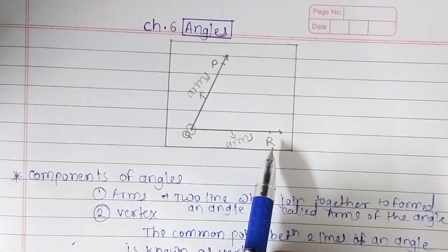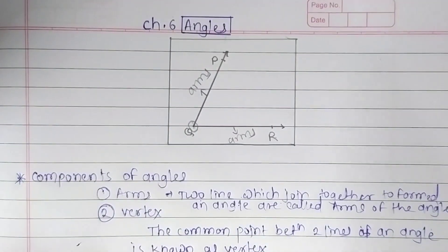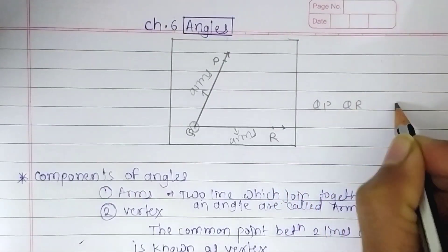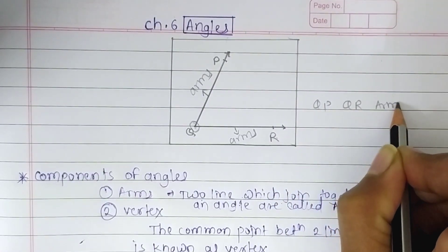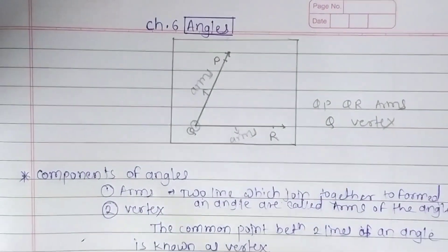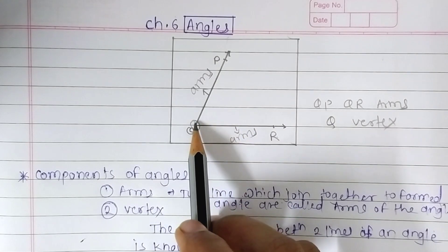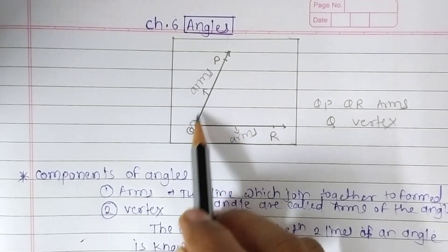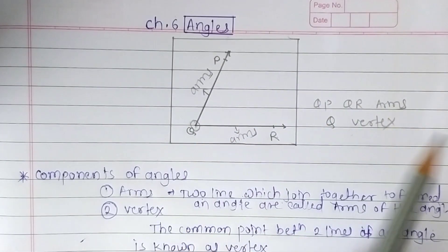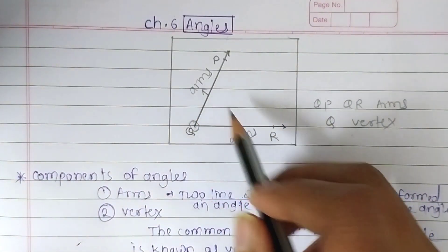In this figure, QP and QR are the arms of the angle, and Q is the vertex of the angle. Remember, when two lines are joined together to form an angle, that joining point is called the vertex, and these two lines are called the arms of the angle.